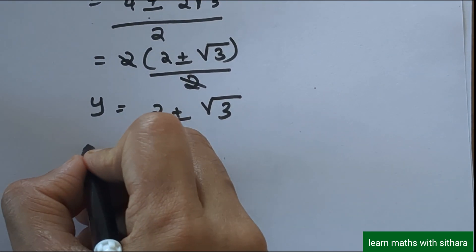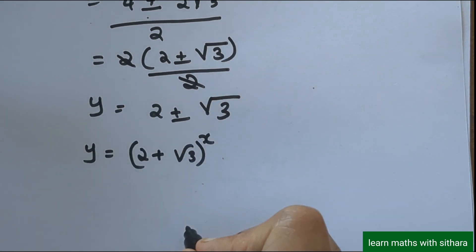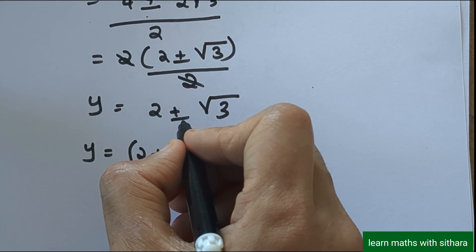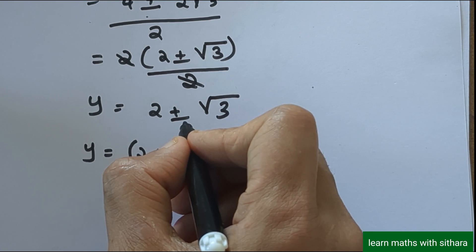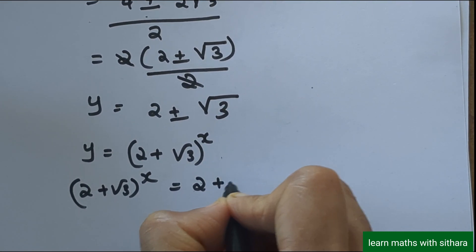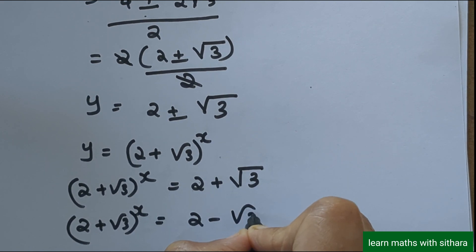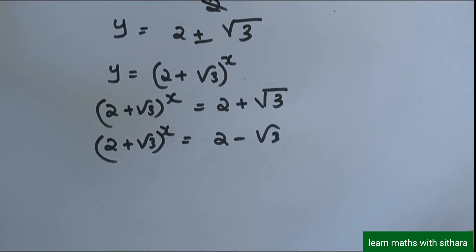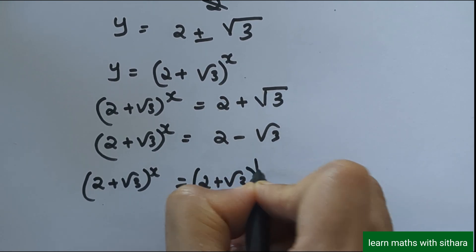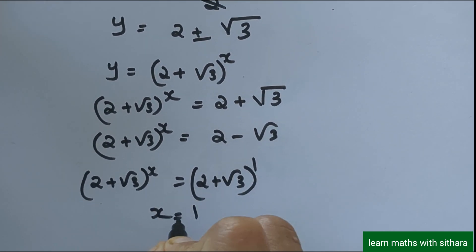We substituted y = (2 + √3) raised to x. Considering the first solution, y = 2 + √3: (2 + √3) raised to x equals (2 + √3) raised to 1. Since the bases are equal, we can equate the exponents, giving x = 1.